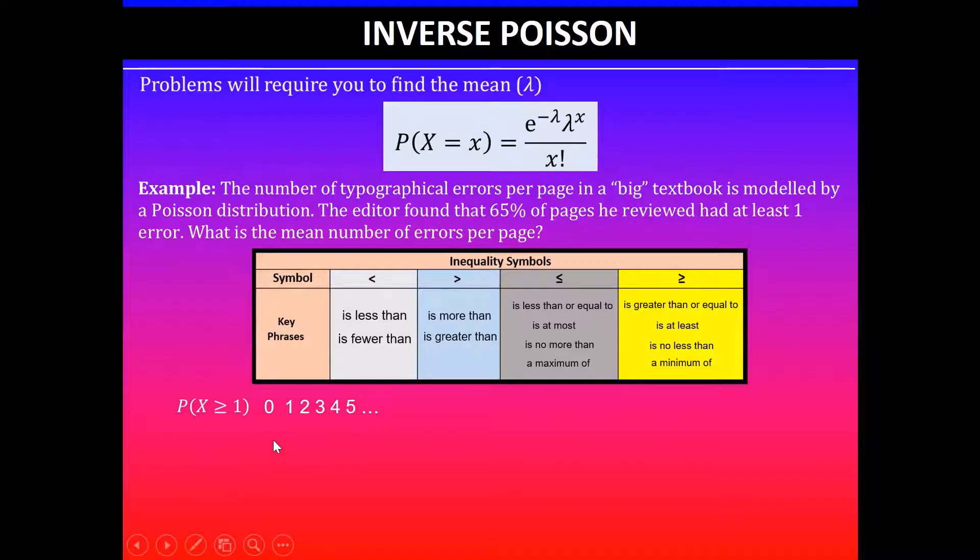If I list the discrete values that x can take, it starts at zero—zero means zero errors per page—and then one error per page, two errors per page, etc., and it could have infinite number of errors per page.